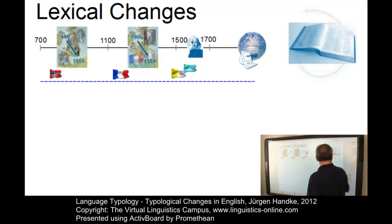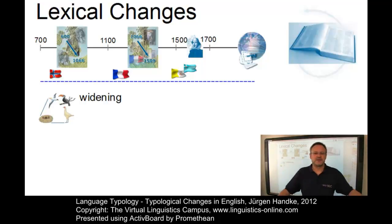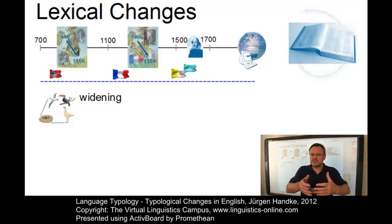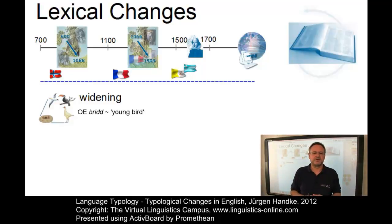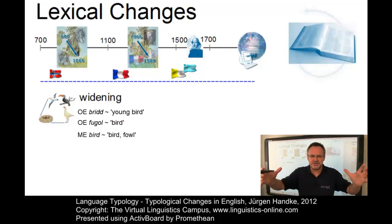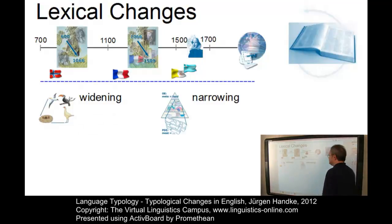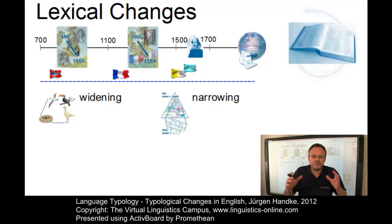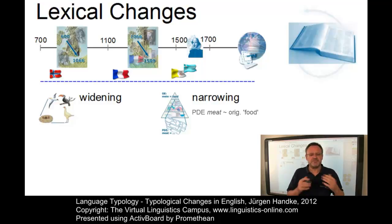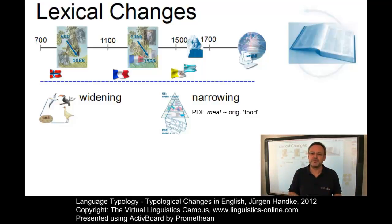Well-known types of lexical change include semantic widening, which takes place when a lexeme acquires additional meanings while still retaining the original meaning — that is, a lexeme widens its meaning. For example, the Old English word 'bird' meant 'young bird'; the general term for a bird was 'fugol' (fowl). During Middle English, 'bird' generalized its meaning to include fowl of any age. Semantic narrowing takes place when a lexeme comes to refer to only part of the original meaning. The original meaning of present-day 'meat' was food in general, but today the meaning has narrowed to a specific kind of food.